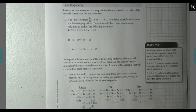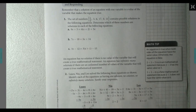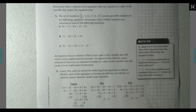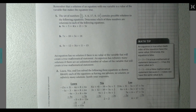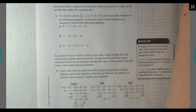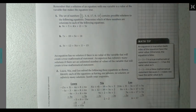We're going to take a look at question number 1, and I'm going to work through questions 1 and 2 together. The set of numbers {1/2, 3, 6, 17, 0, and 11} contains possible solutions to the following equations. Determine which of these numbers are solutions to each equation. I'm going to work this on a separate piece of paper because I won't have enough room to try all of these.